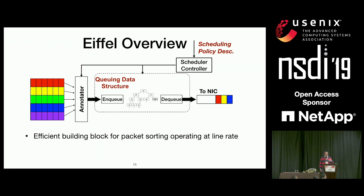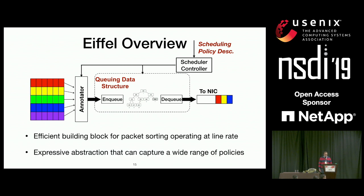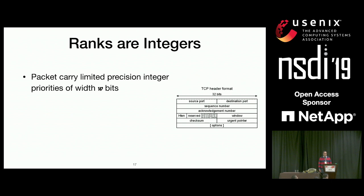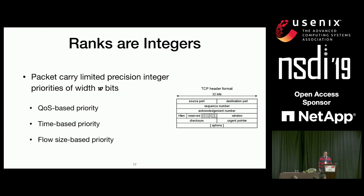We want efficient priority queues that handle packet ordering at line rate, as well as expressive abstractions that capture a large range of scheduling policies. To do that, we examined the characteristics of packet ranks. First, packet ranks are integers, typically represented by a finite number of bits — say W bits. This is true for almost all types of packet ranks: class-based priority, cross-based ranks, time-based ranks, or flow-size-based ranks.